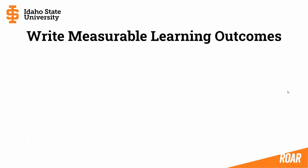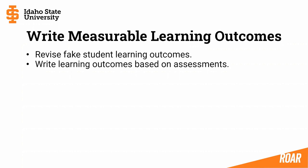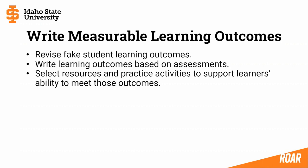Moving this into practice — by having awareness about fake learning outcomes, we can actually revise them to make them more specific and measurable. We can also incorporate backwards design. If you already have signature assessments or practice activities for students, you can look at those existing activities and see what students are actually doing or demonstrating, then write the learning outcomes based on that. And once you've written measurable outcomes, you can then select resources and practice activities to support learners' ability to meet those outcomes. We refer to that as alignment in the Quality Plus program as well as the Quality Matters rubric.